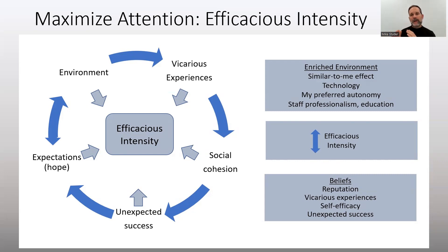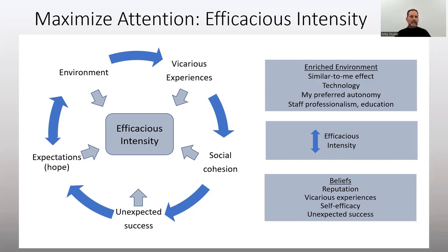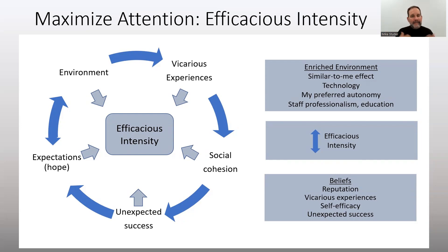The vicarious experiences would be on a more direct relationship — that the individuals helping me learn have been with other people like me and have had successful experiences. Social cohesion means that there are other people around me going through things similar to what I'm going through, and we are all in this together. They are improving, and I have strong efficacy and belief that I will also similarly be able to improve.